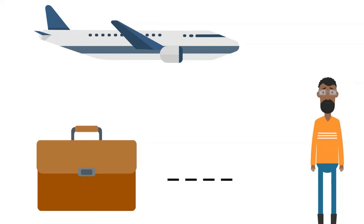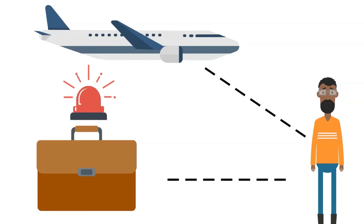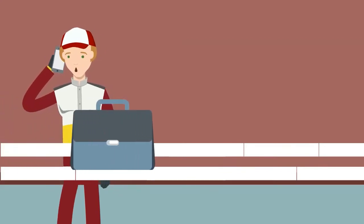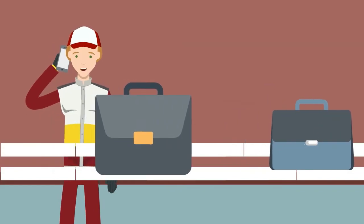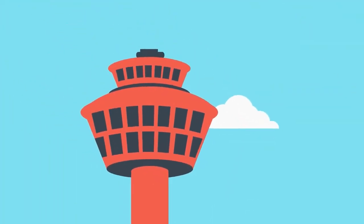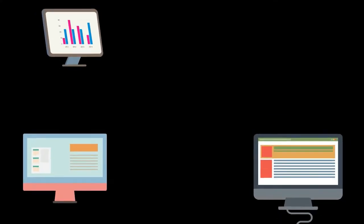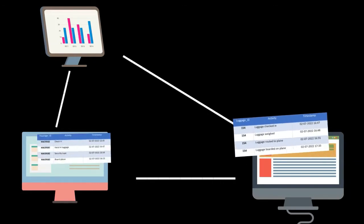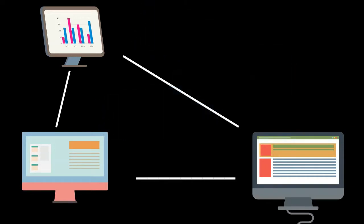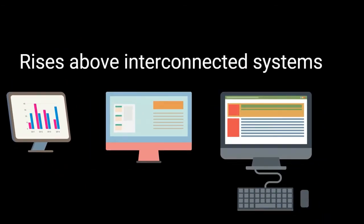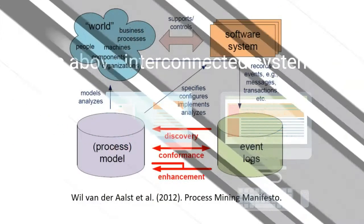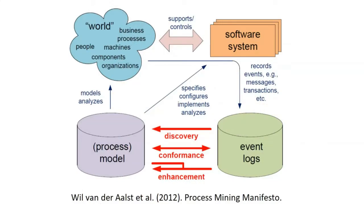Every piece of luggage is linked to a traveler, and every traveler is linked to a flight. A hiccup in one process can lead to delays in another process. For example, if half of the luggage is delayed in the luggage handling process, this can cause a domino effect and cause delays in the flight schedule of the air traffic control system. Different systems being interconnected in this manner is quite common for large industrial enterprises that oversee complex supply and logistic chains. We want to make process mining work in a way that rises above such interconnected systems and transforms isolated event logs into one consolidated master event log.